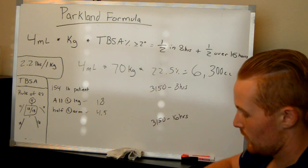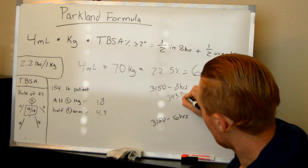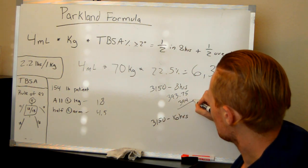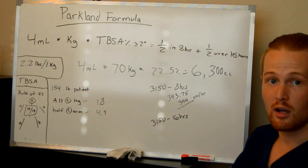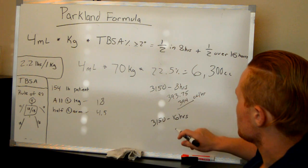Well, 3,150 divided by 8 is going to be 393.75, so you're going to do 394 cc's per hour. So that's pretty much a bolus at that point, is how fast you're going to run them for the first 8 hours.